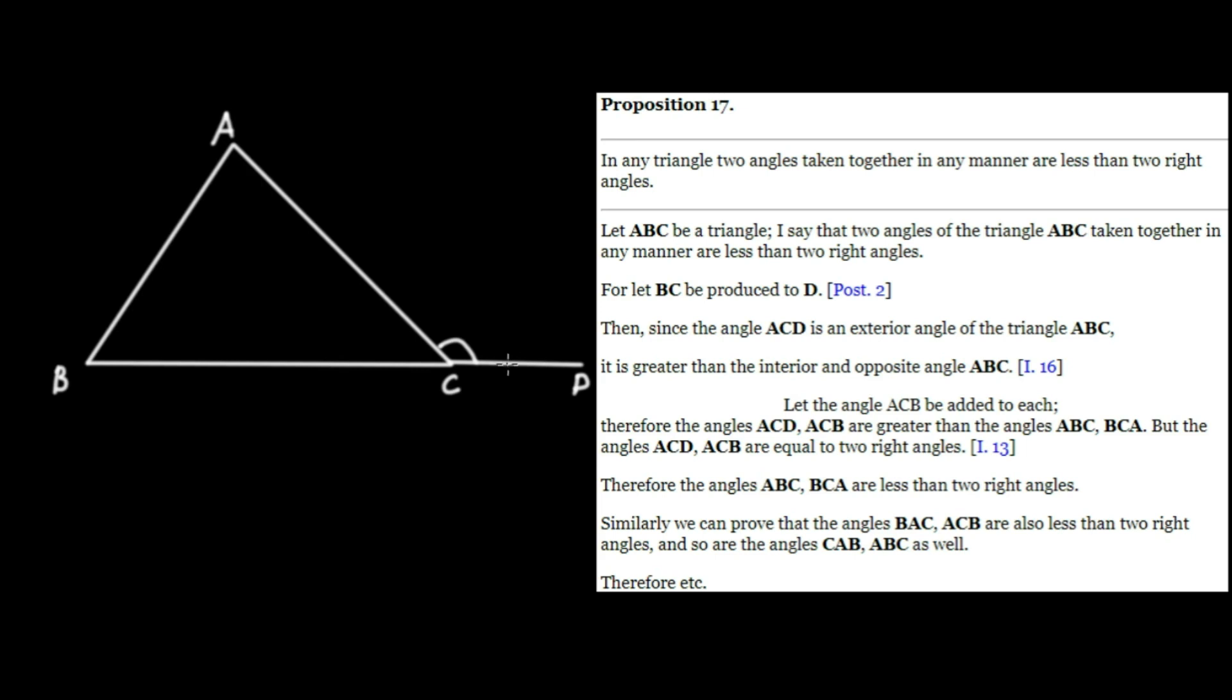Recall that's just what we proved in the last theorem, Proposition 16, that this angle is guaranteed to be greater than this angle over here, and also greater than this angle, the interior and opposite angles within the triangle. So ACD is certainly greater than ABC.